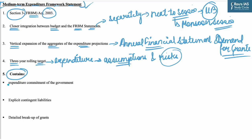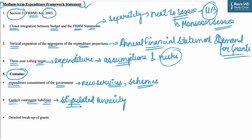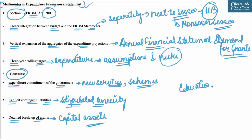The MTEF Statement is presented to Parliament under Section 3 of the FRBM Act 2003 and aims at closer integration between the budget and FRBM statements. It sets a three-year rolling target for expenditure indicators with specification of underlying assumptions and risks. It contains the expenditure commitment of the government on major policy changes including new services, new schemes and programs, explicit contingent liabilities in the form of stipulated payments over a multi-year timeframe, and a detailed breakup of grants for creation of capital assets. The statement also provides estimates of expenditure commitments on items such as education, health, rural development, energy, subsidies, and pension.